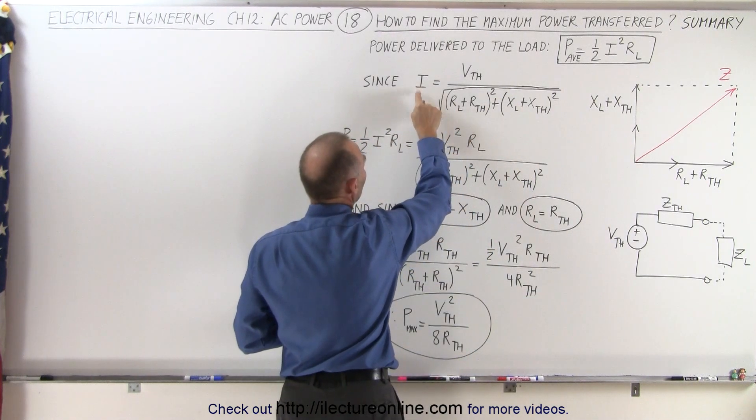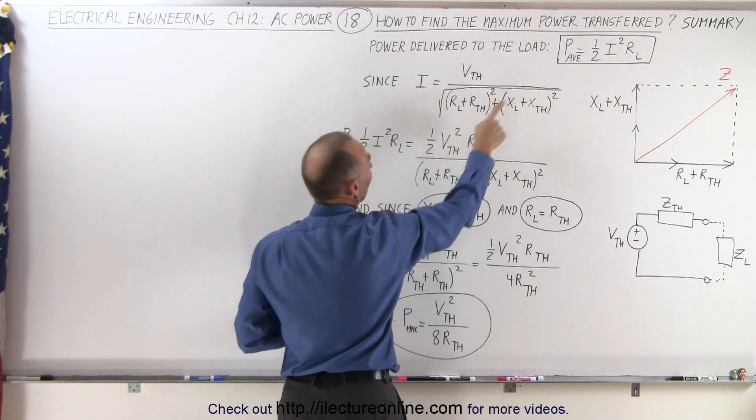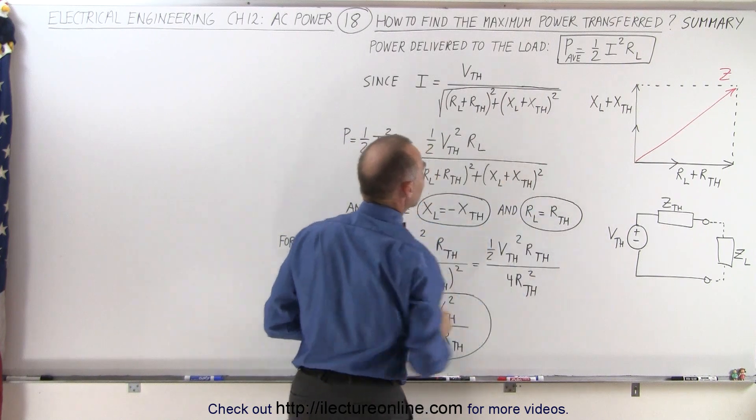If we now square both sides we have i squared is equal to v squared divided by this quantity squared, so then i squared in the equation will be replaced by v squared divided by the impedance squared.